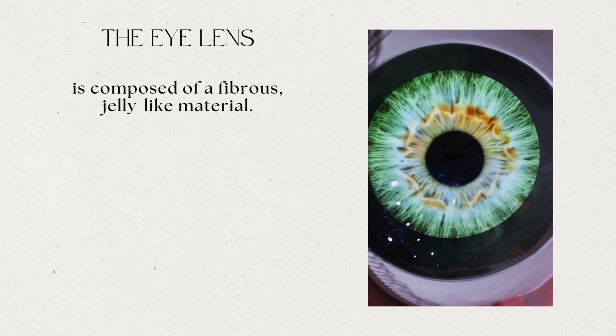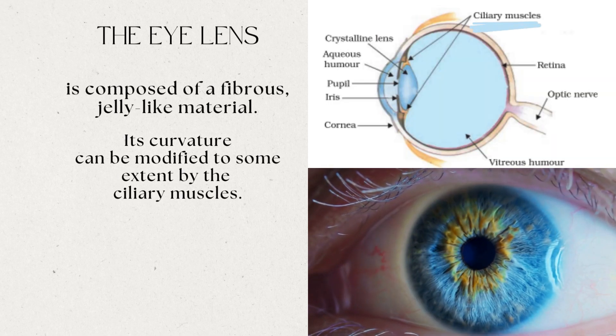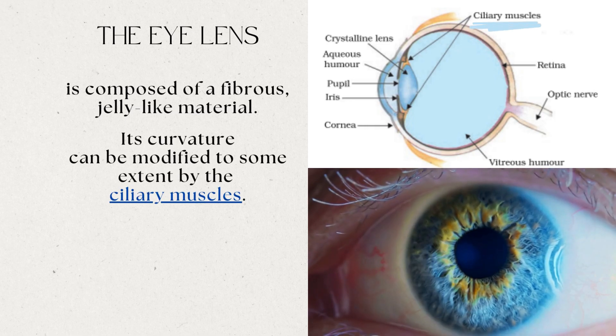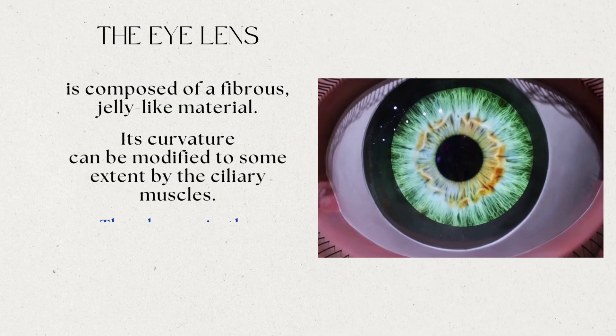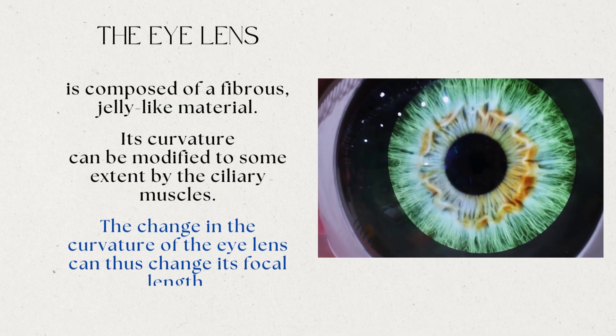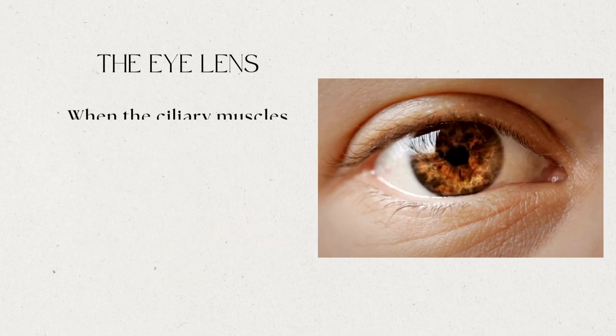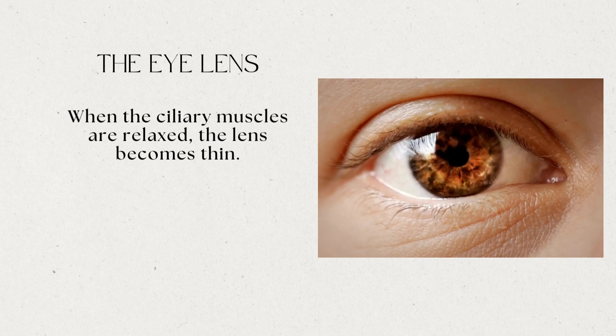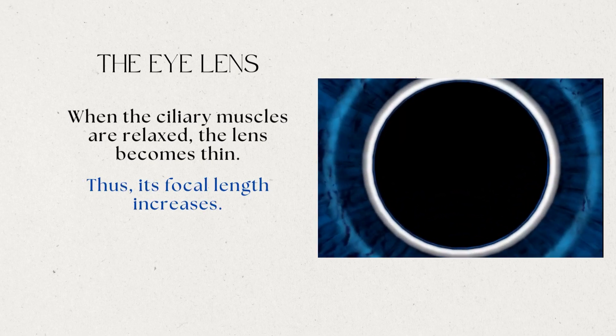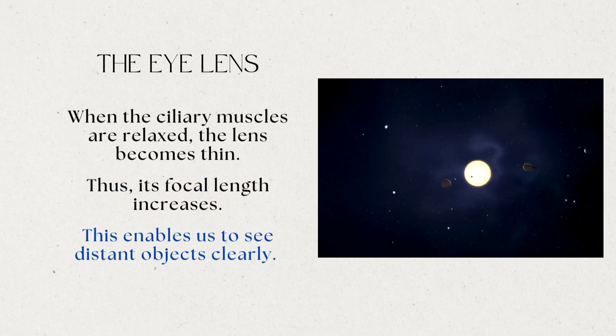The eye lens is composed of a fibrous jelly-like material. Its curvature can be modified to some extent by the ciliary muscles. The change in the curvature of the eye lens can thus change its focal length. When the muscles are relaxed, the lens becomes thin. Thus, its focal length increases. This enables us to see distant objects clearly.